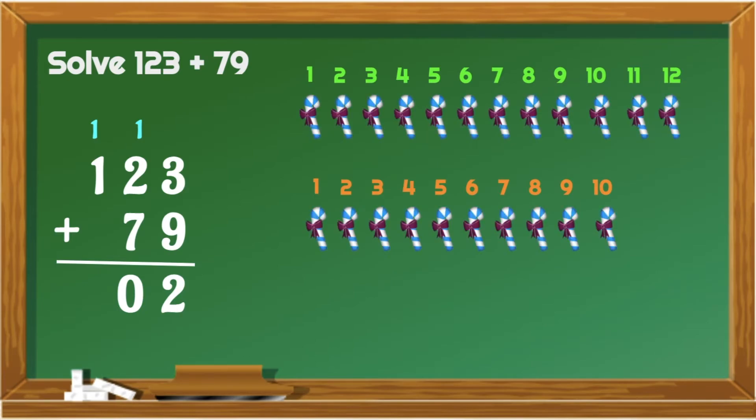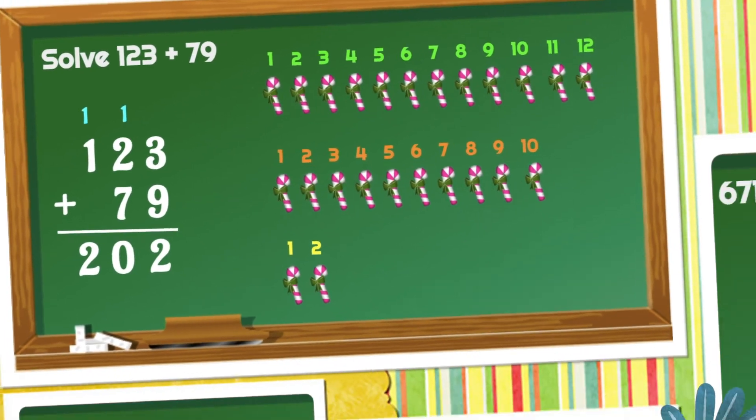Now, let's add the hundreds place. 1 plus 1 would give us 2. 123 plus 79 is equal to 202. Good job, learners!